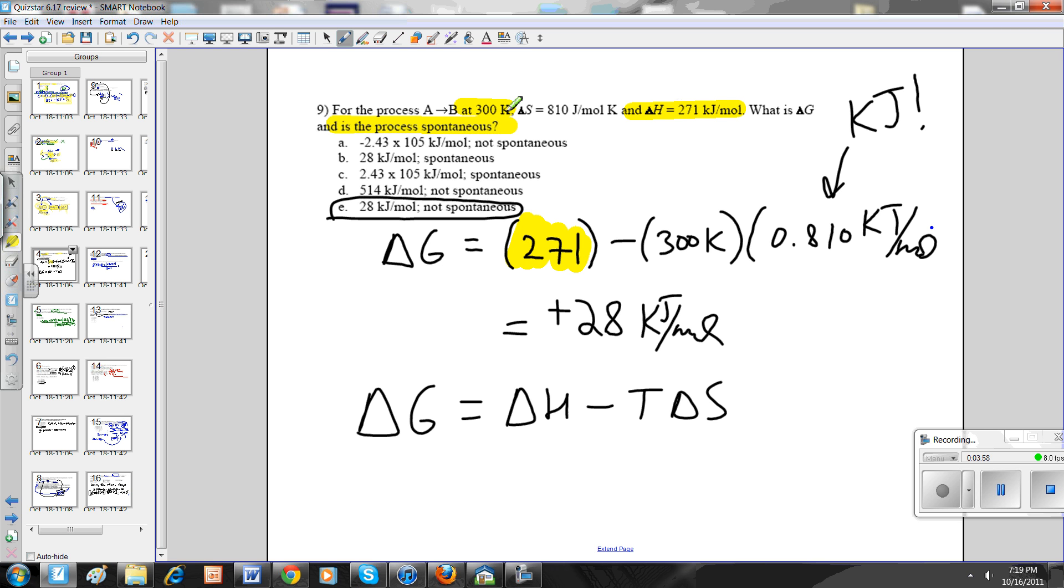They tell you the temperature is 300 Kelvin. So I put it in for T right there. Last thing I have to do is the S value. The S value I must change to kilojoules. Must. So I take 810 and using conversion to kilojoules, I convert it to 0.810. Pop that into going home to supper and the value is positive 28 kilojoules per mole. And since the value is positive, therefore you know it is not spontaneous reaction.